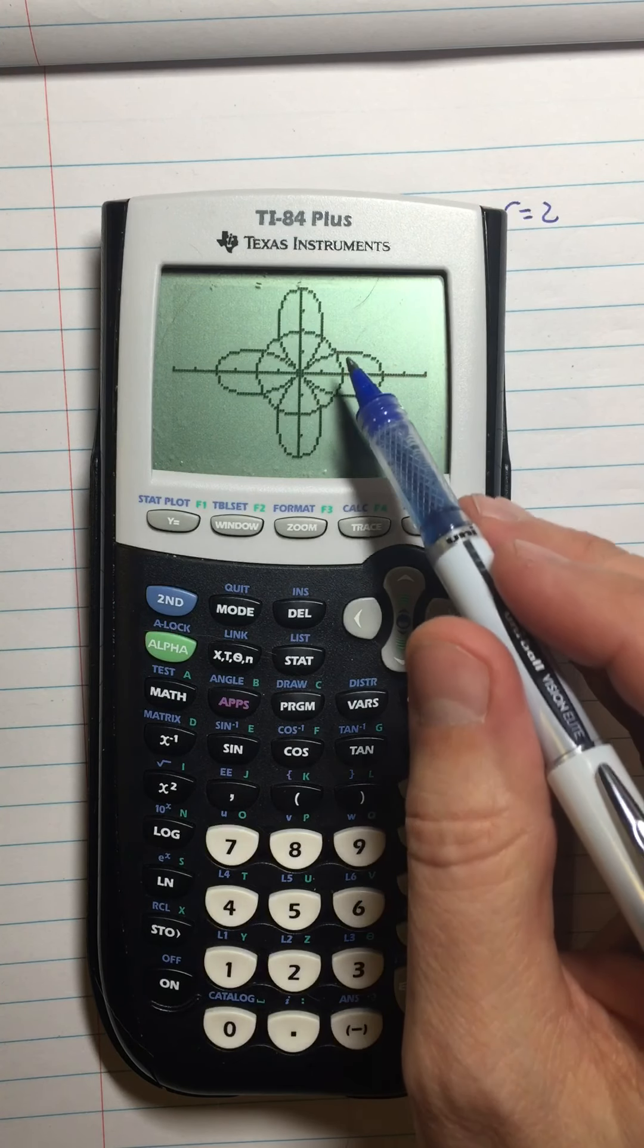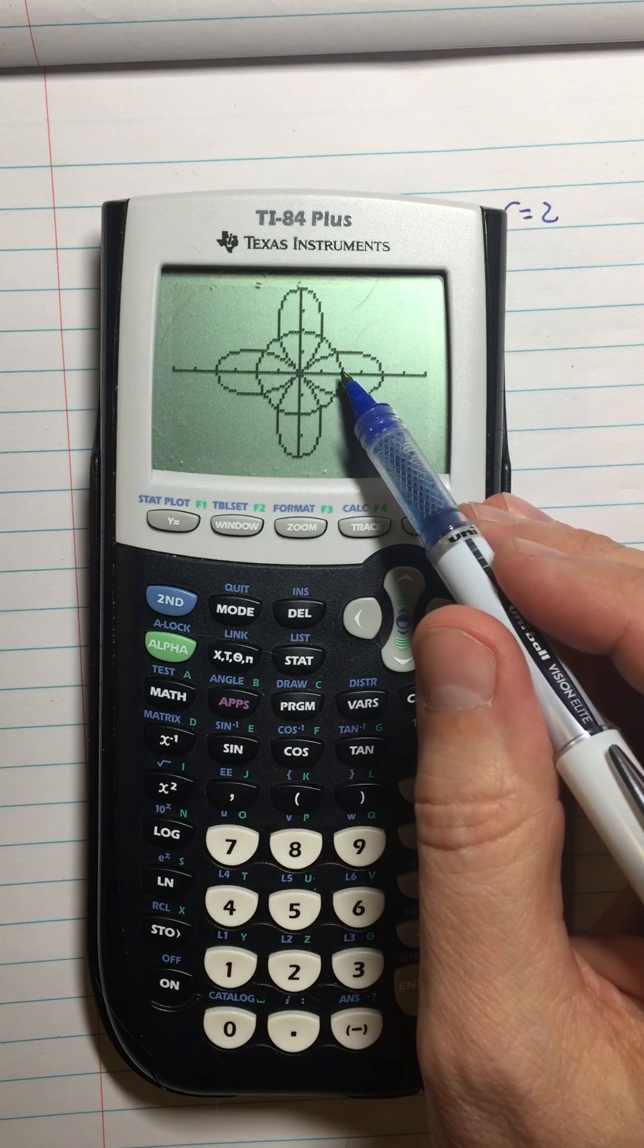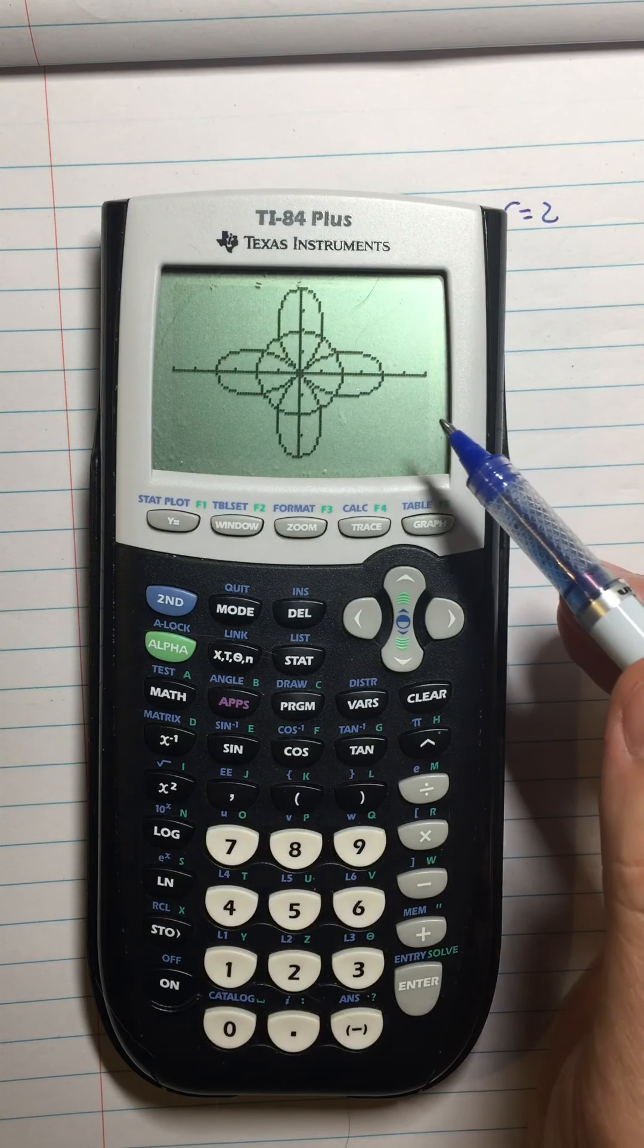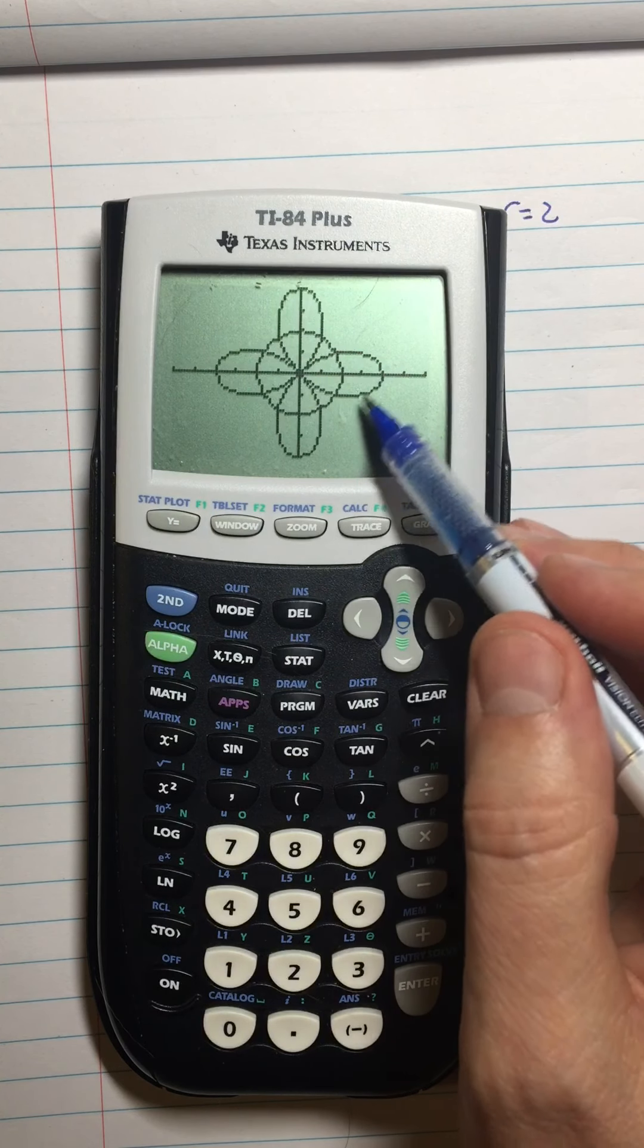We're talking about the area between two curves, so essentially we're going to do r1 squared minus r2 squared and integrate that with a one half in front. But where does it begin and end?